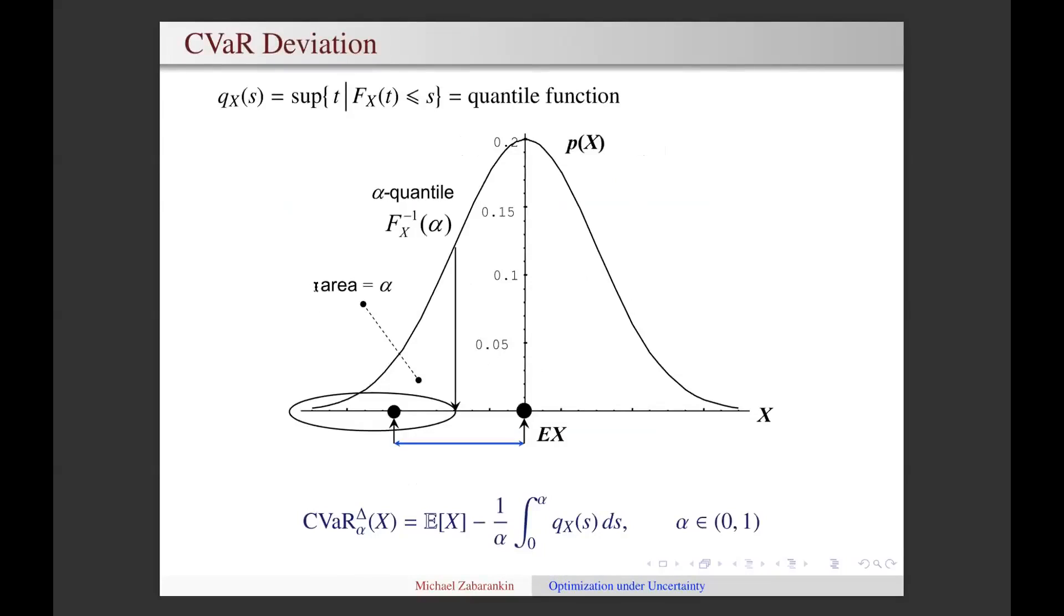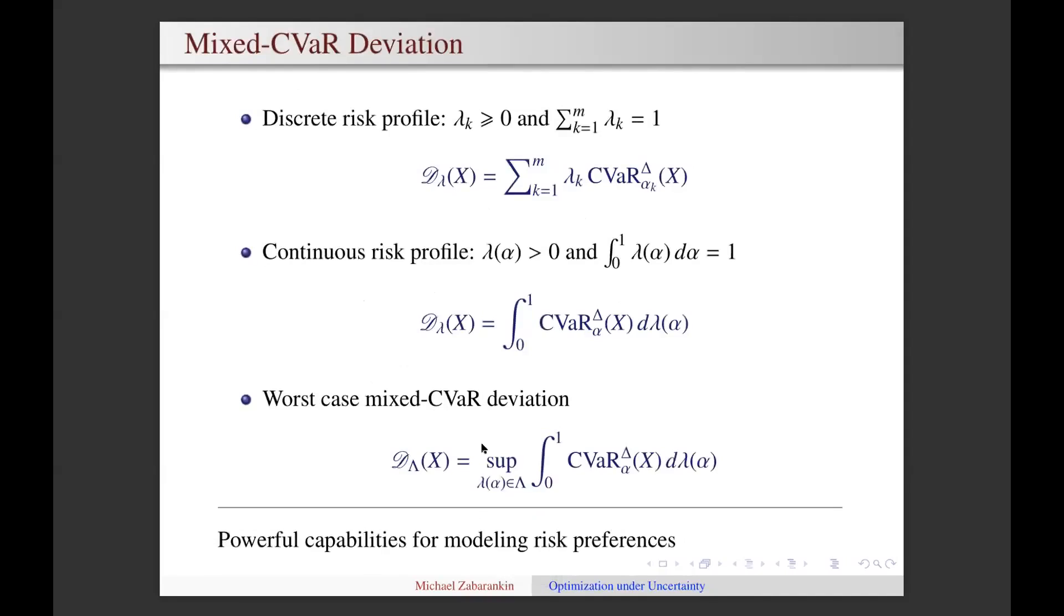In particular, CVaR deviation has the following meaning. Suppose this is the probability density function of some random variable X. Here, EX is the expected value of X and q of X is the quantile function of X. Then CVaR deviation for a given level alpha, which is between 0 and 1, is the distance between the expected value of X and the average of the tail corresponding to the alpha quantile. So this difference is exactly the geometric meaning of CVaR deviation.